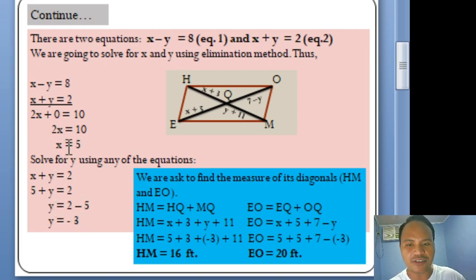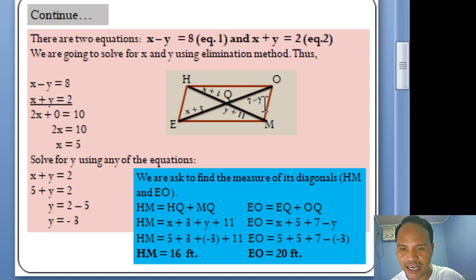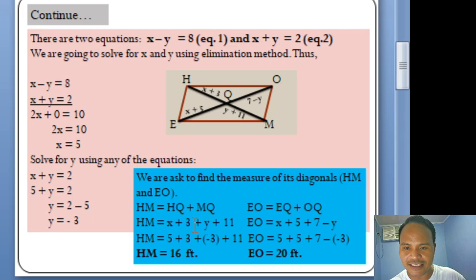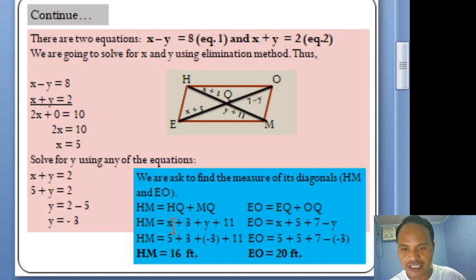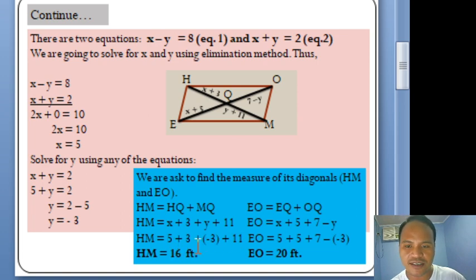Since we are asked to find the measure of each diagonal, we apply the Segment Addition Postulate. HM = HQ + MQ. By substitution, HQ = X + 3 and MQ = Y + 11. Substituting X = 5 and Y = −3 gives (5 + 3) + (−3 + 11) = 8 + 8 = 16 feet. Therefore, HM = 16 feet.